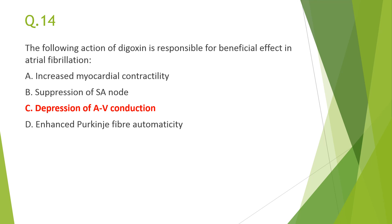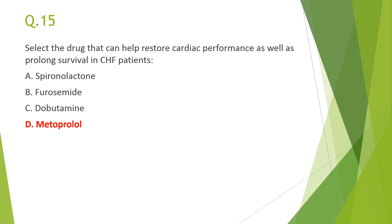Next: select the drug that can restore cardiac performance as well as prolong survival in CHF — answer D, metoprolol. Spironolactone prolongs survival by altering pathological remodeling but does not restore cardiac performance. Furosemide reduces symptoms by reducing preload but does not prolong survival. Dobutamine, a positive inotrope, can restore cardiac performance but not prolong survival. Metoprolol, a selective beta-1 blocker, reduces symptoms, restores cardiac performance, and prolongs survival by preventing pathological remodeling.